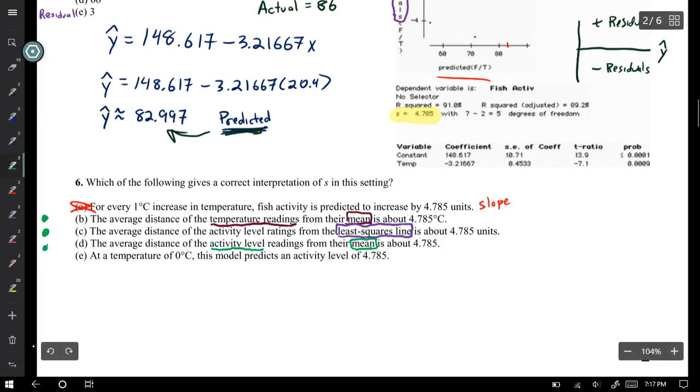For every 1 degree Celsius increase in temperature, the fish activity is predicted to increase by 0.4785 units. That sounds too much like an interpretation for slope, so it's not A. The average distance of the temperature readings from their mean is about 4.785 degrees Celsius. That sounds like an interpretation of standard deviation.